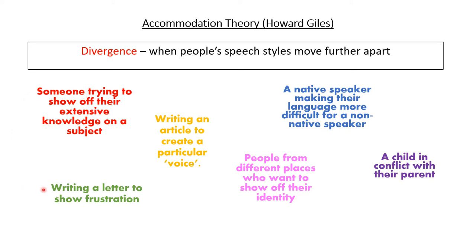Next we have a couple of written examples. The first is writing a letter to show frustration — if you were really frustrated with a particular company and wanted to get a reaction, someone using divergence through expletives and strong imperatives, in contrast to any previous politeness, might get a bigger reaction and a quicker result. The other written example is writing an article to create a particular voice — if you were trying to write something purposely controversial, you might use particular lexis and diverge from your normal vocabulary to get a bigger reaction from your audience.